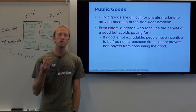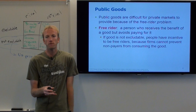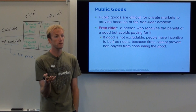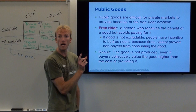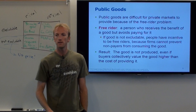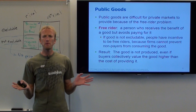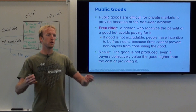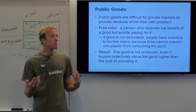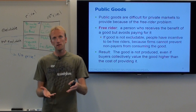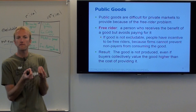If a good is non-excludable, firms cannot prevent non-payers from consuming it. So no firm is going to build a park because they won't be able to profit from it — they can't charge a price. The private market won't work to build a park. The good wouldn't be produced in the private market even if buyers collectively value it higher than the cost of providing it. The only entity that can build a park is the government.